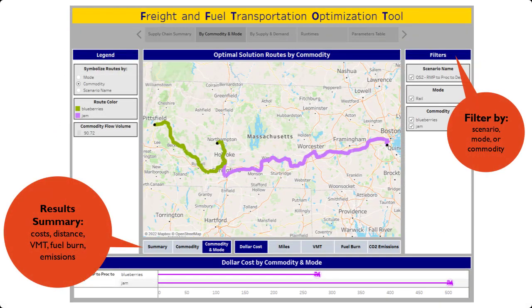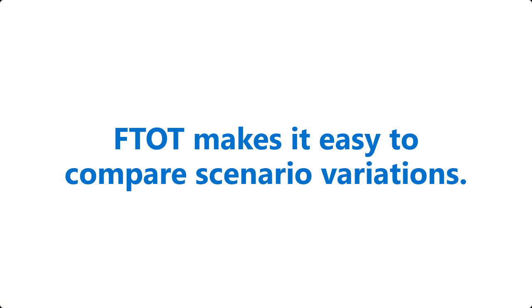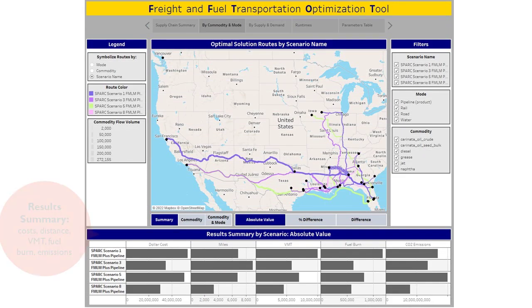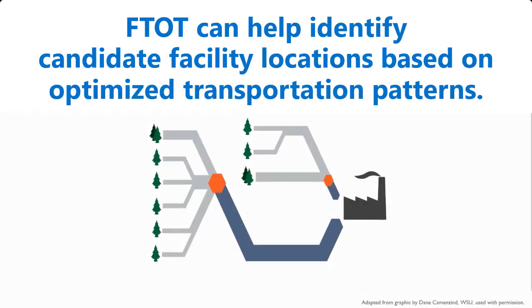Scenario dashboards allow the user to explore and filter results. FTOP also makes it easy to compare variations and scenarios — scenario comparison dashboards enable users to understand and compare optimal routing across scenarios. FTOP can even help identify candidate facility locations based on optimized transportation patterns.